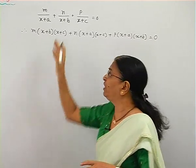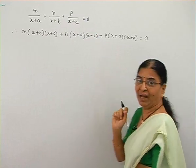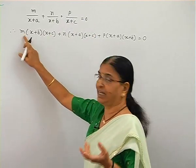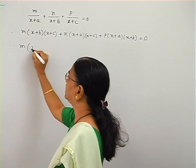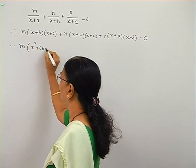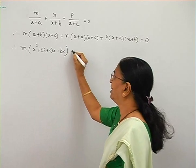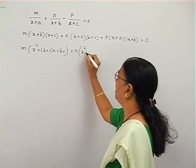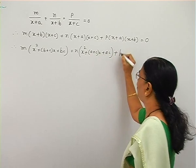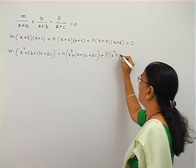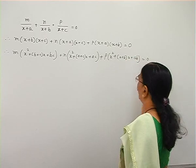Because whatever LCM is there, multiplying by zero gives zero. Now expanding: M into (X squared plus (B plus C)X plus BC), plus N into (X squared plus (A plus C)X plus AC), plus P into (X squared plus (A plus B)X plus AB) equals zero.